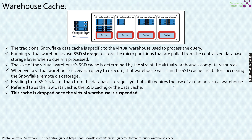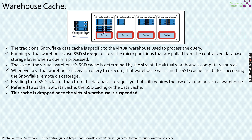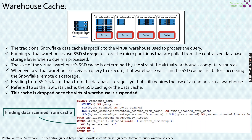Reading from SSD is faster than reading from database storage, but it still requires a running virtual warehouse. This cache is referred to as the raw data cache, SSD cache, or data cache — all these terminologies refer to the warehouse cache. Importantly, this cache will be dropped once the virtual warehouse is suspended, since it is attached to that specific warehouse. To find data scanned from the cache, you can use the query history view — the bytes scanned and bytes scanned percentage from cache can also be seen in the statistics on the query profiler.